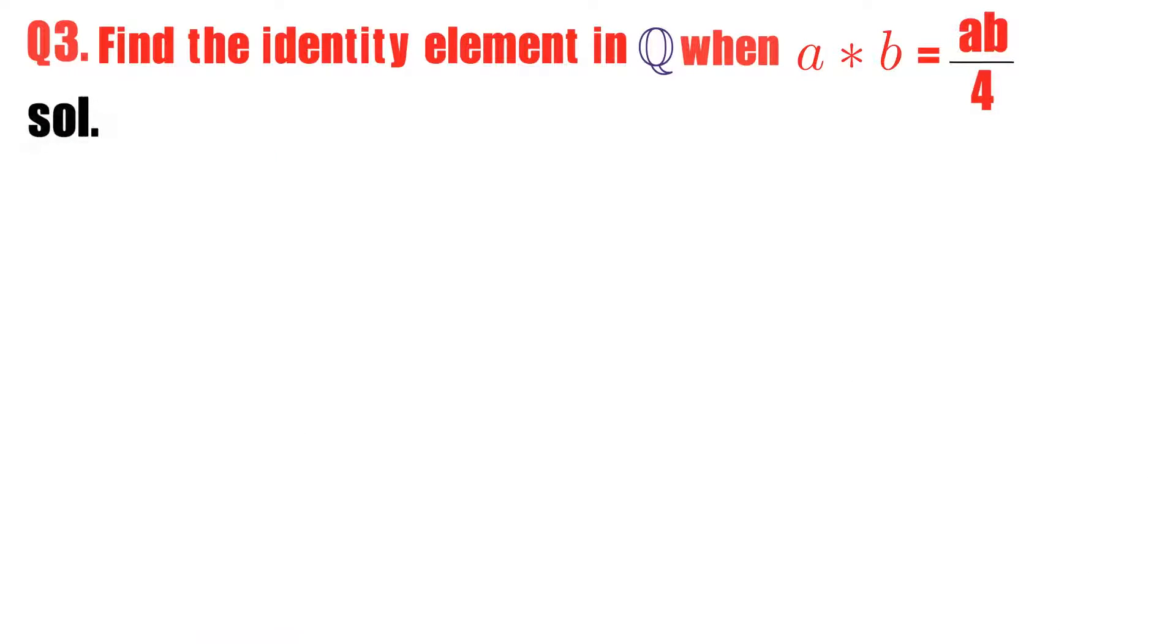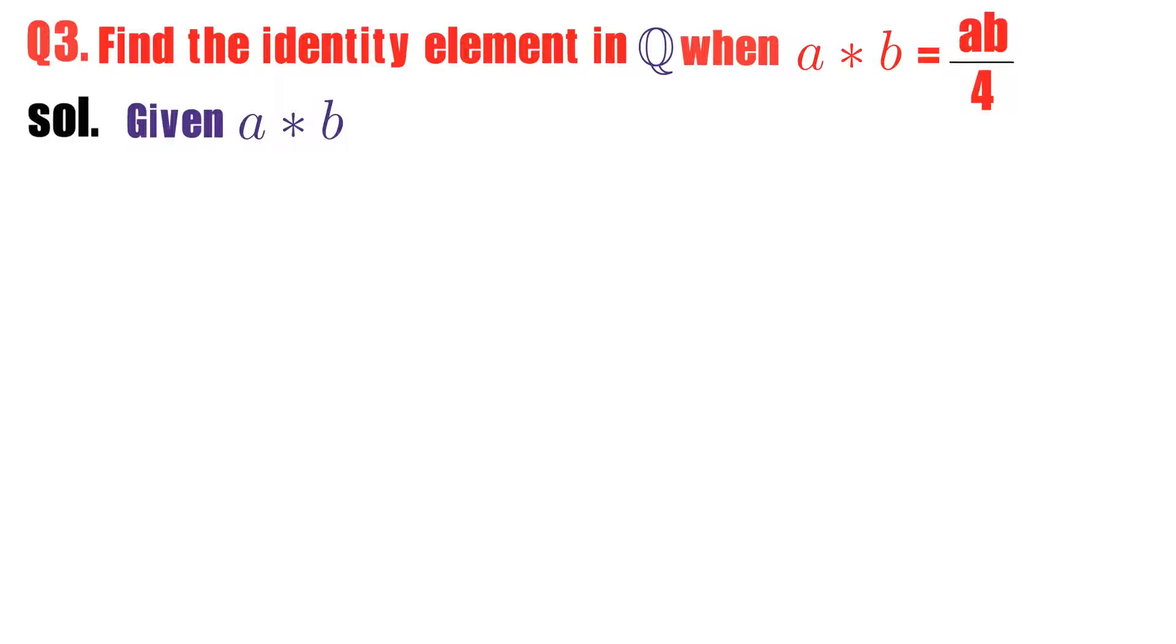Solution for this problem. What is the given information? Given that a star b equals ab divided by 4. You observe here a star b - a is first element, b is second element. a star b is ab by 4.